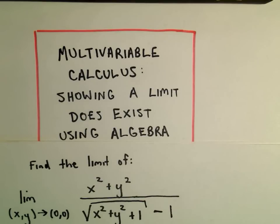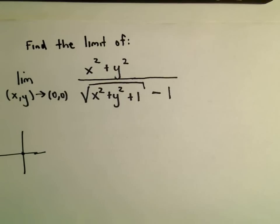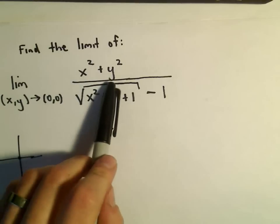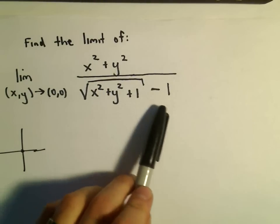Alright, in this video I want to do a multivariable calculus problem, and here we're going to show a limit exists using algebra. So we're going to look at the limit as x, y approaches 0, 0 of x squared plus y squared over the square root of x squared plus y squared plus 1 minus 1.